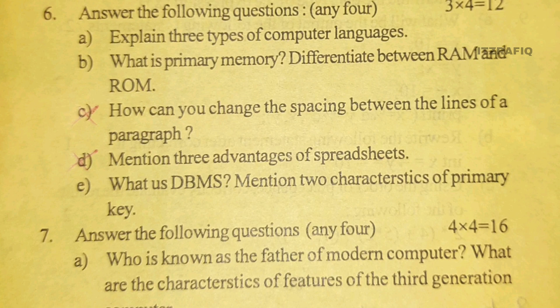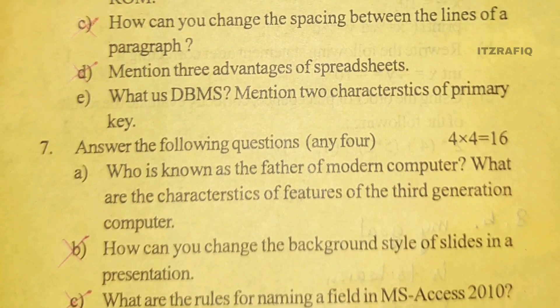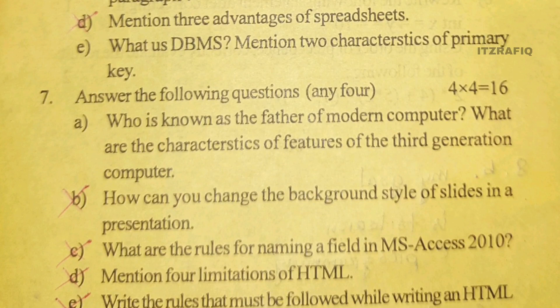What is DBMS? Mention two characteristics of primary key. Primary key characteristics: they are always unique, you cannot enter duplicate value in a primary key field. Who is known as father of computer? Charles Babbage.